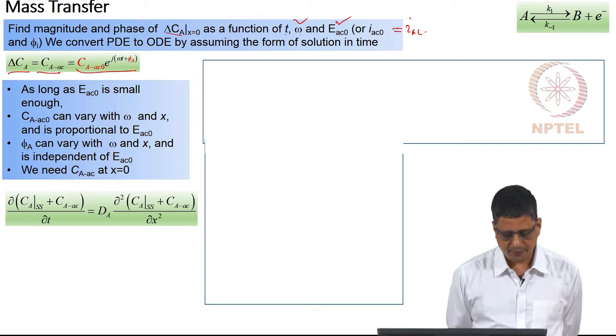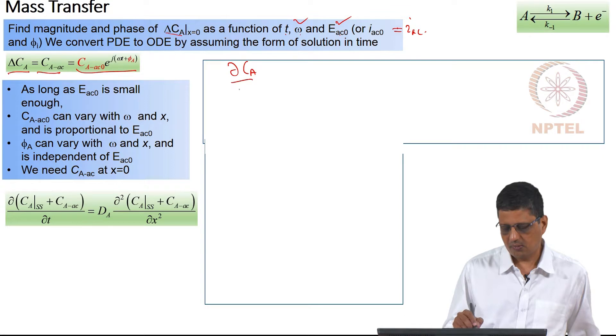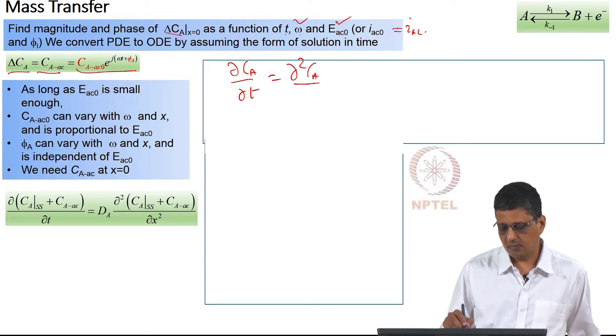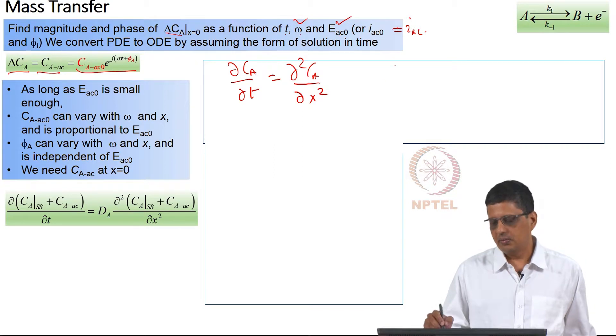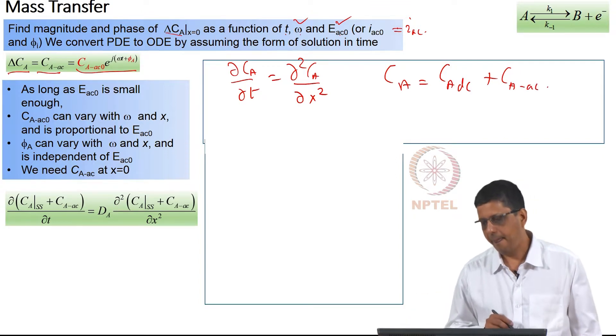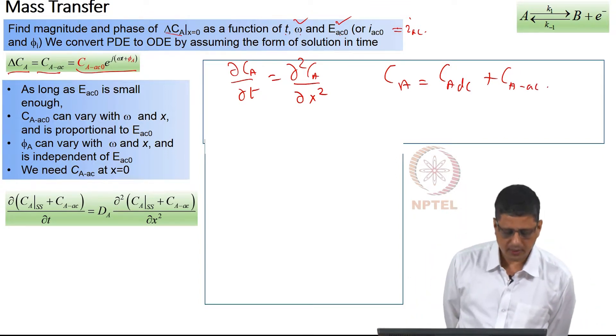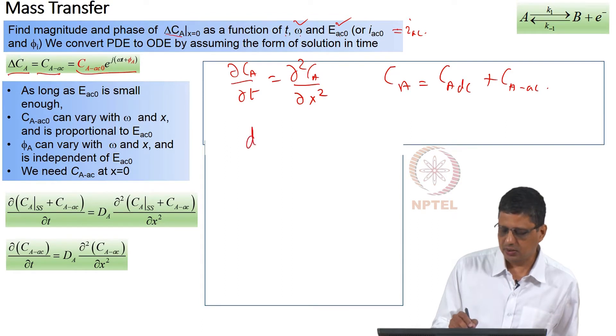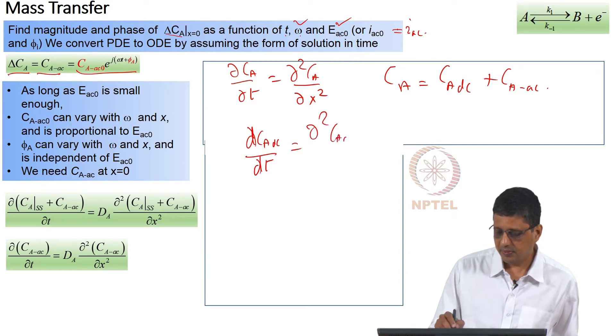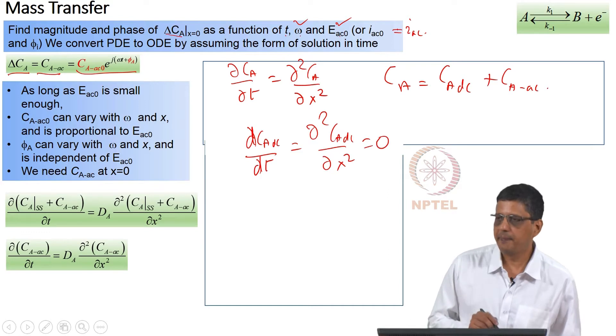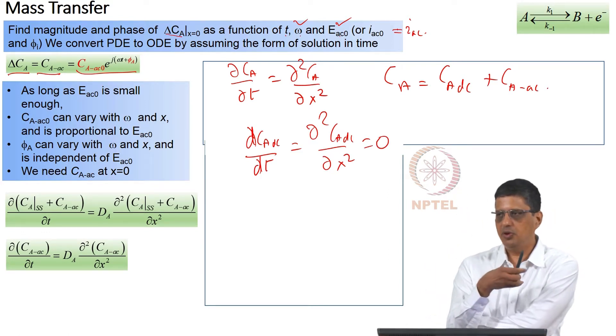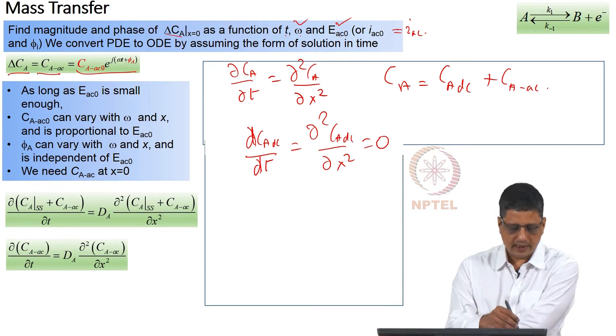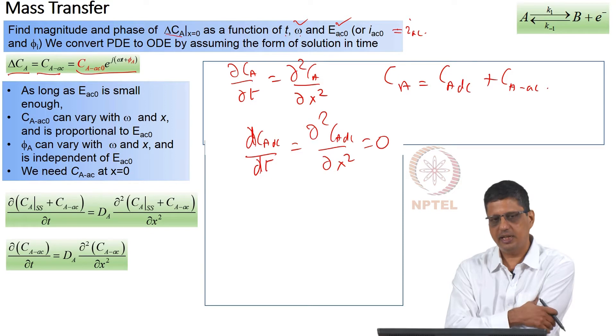So, we take the Fick's equation. Now dc is in fact obtained by taking this and setting this to 0. ∂C_A_dc/∂t. This is obviously valid when you do not have AC either. So, I can take this and write for the AC component, this equation can be written like this.